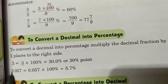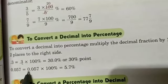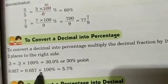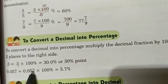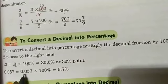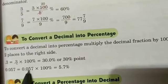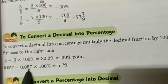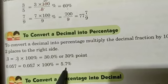Understand one more example: 0.057. So 0.057 into 100 — we shift two places to the right. First place and second place after the decimal. So we put the number after the second place, giving 5.7 as the answer.